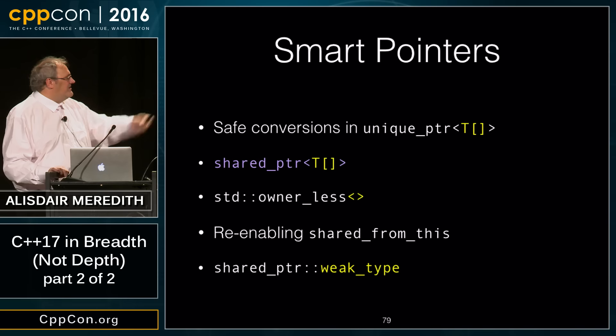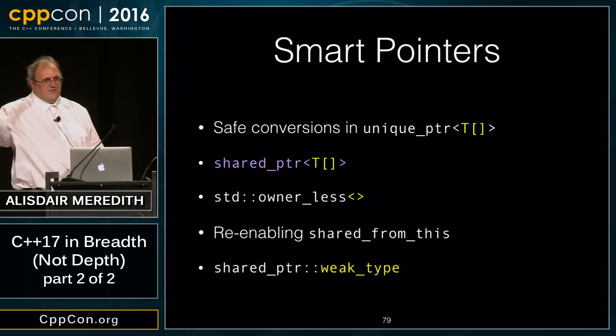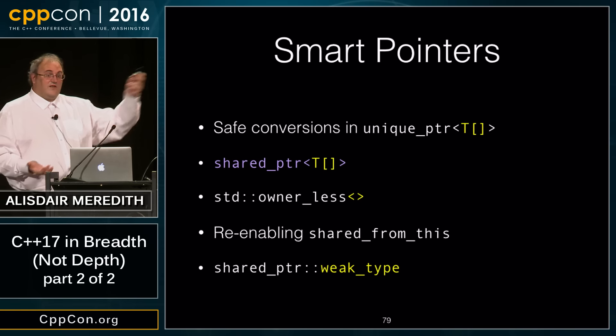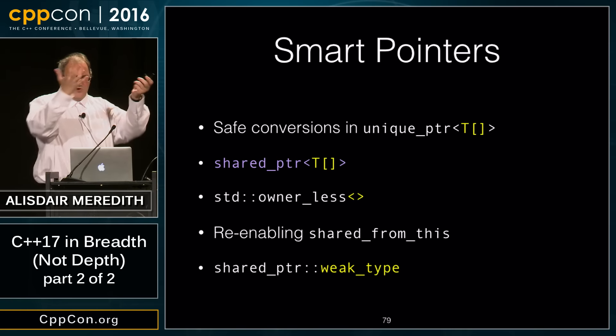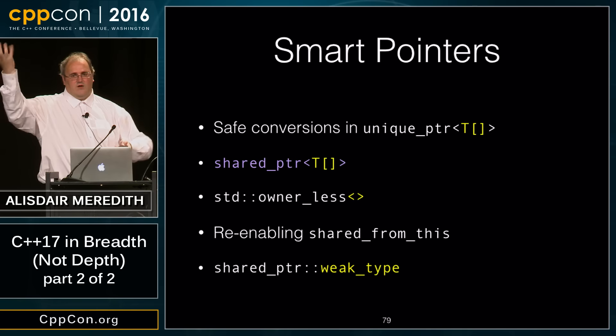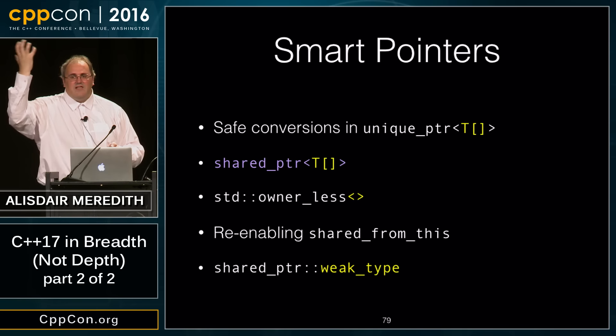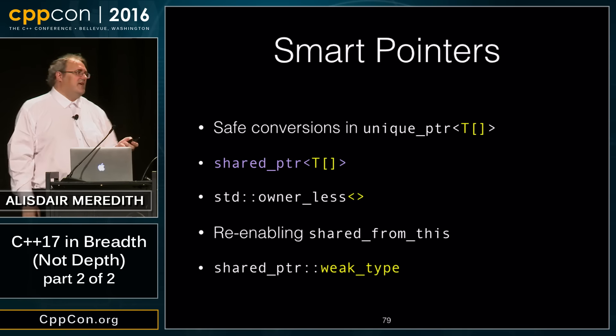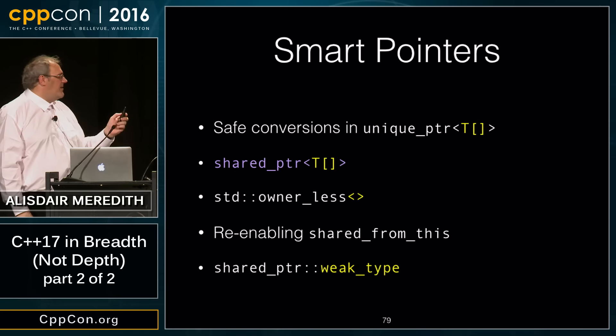Finally, shared_ptr::weak_type lets us get the weak_ptr analog of the current shared_ptr without immediately having access to the type parameters.